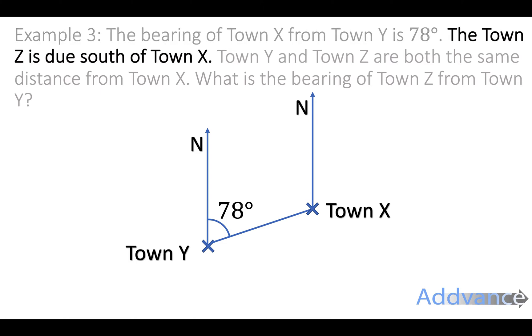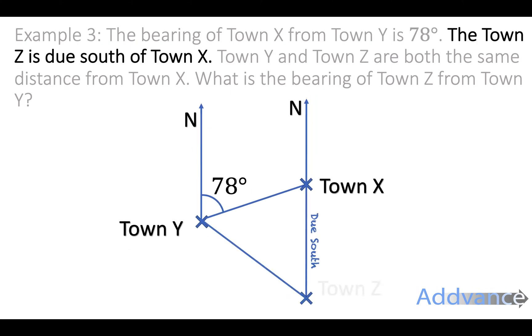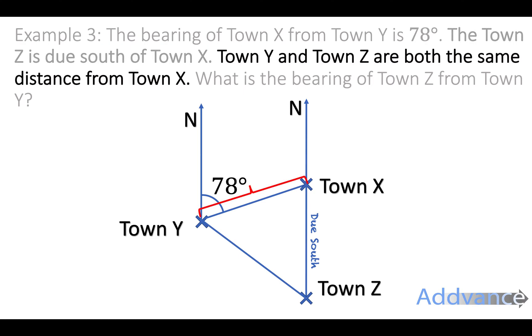Let's look at the second sentence now. The town Z is true south of town X. So we can draw a line due south of town X to town Z. That is true south. Due south just means directly south, which is opposite of north. Now our next sentence says town Y and town Z are both the same distance from town X. So these two distances here are exactly the same. And therefore it's an isosceles triangle, and we can label it as an isosceles triangle, which is useful. What is the bearing of town Z from town Y?